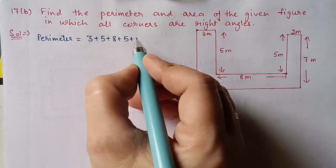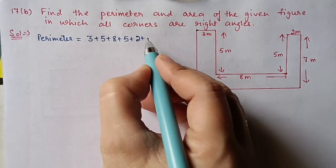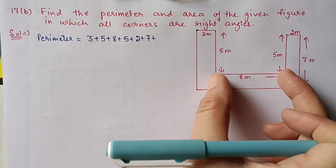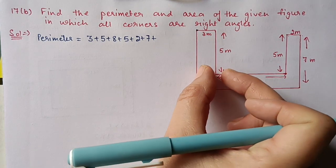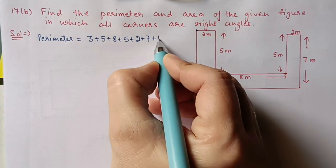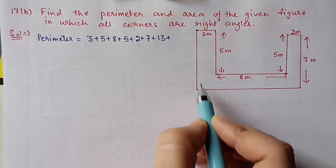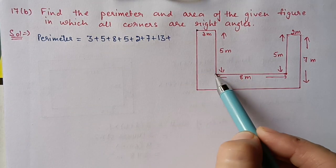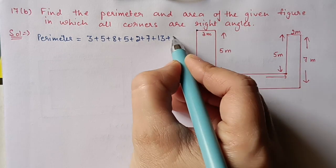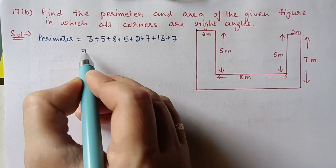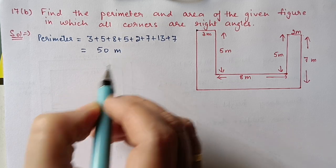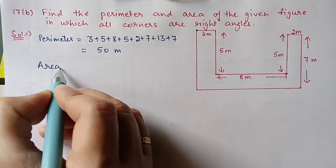Starting from a corner: first side is 3, then 5 plus 8, then again 5. The middle portion: 8, this side 2, and this side 3, so 8 + 2 + 3 = 13. This side is 5, and the next is given as 7, so this one will also be 7. After adding all these, we are getting 50 meters.